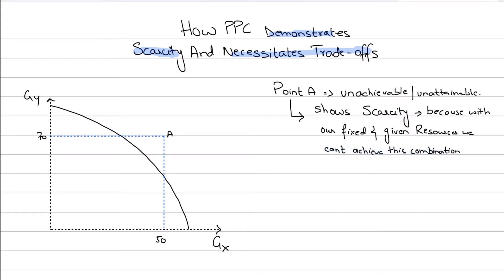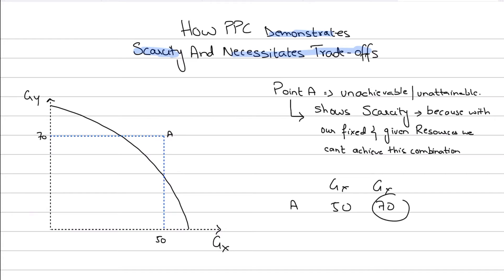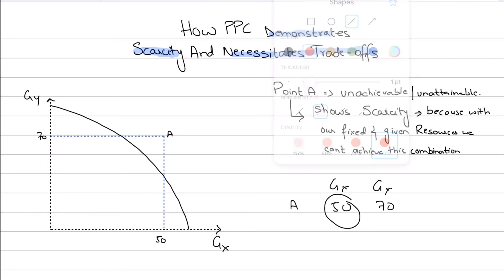Point A demonstrates scarcity — with fixed given resources we cannot achieve that combination. For example, if the firm wants to produce 50 units of good X and 70 units of good Y at point A, that is not possible. You have to mention that this is because of scarcity of resources. If you want to produce 50 X, you cannot also produce 70 Y; you need to compromise on Y, and vice versa.